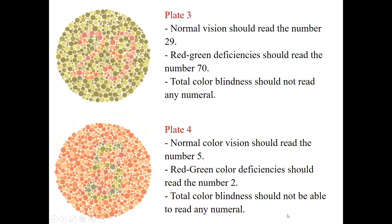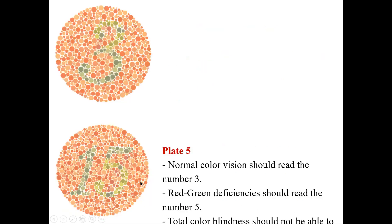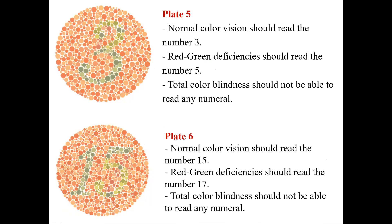In plate 3, normal people read it as 29, green deficiency people read it as 70, and total color blindness cannot read any number. In plate 4, the number is 5: green color deficiency reads it as 2, and total color blindness cannot read any number. In plate 5, normal people read 3, green deficiency reads 5, and total color blindness cannot read any number. In plate 6, normal people read 15, green deficiency reads 17, and total color blindness cannot read any number.